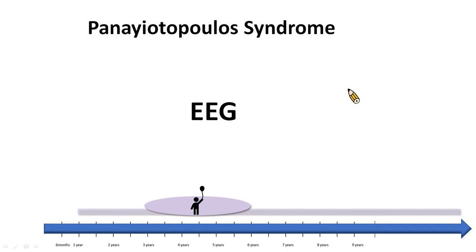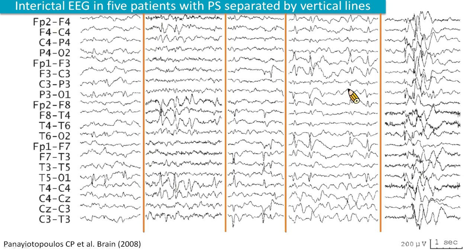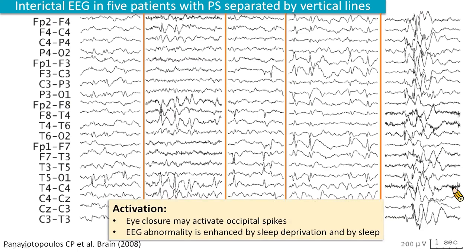Let's look at the EEG. This slide shows interictal EEG in 5 patients with Panayiotopoulos syndrome, separated by vertical lines. All have similar clinical features. However, the spikes are localized in either occipital, central temporal, or frontal areas, or are multifocal and may appear clone-like. Short bursts of generalized discharges of slow waves with small spikes are sometimes seen as an interictal EEG feature. Eye closure may activate occipital spikes. EEG abnormality is enhanced by sleep deprivation and by sleep.